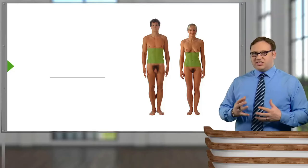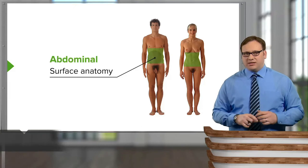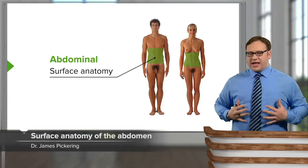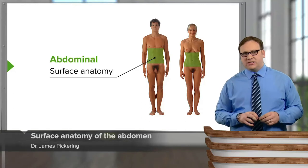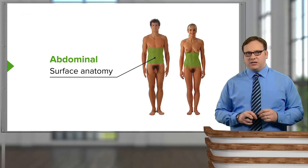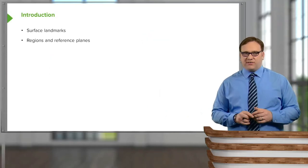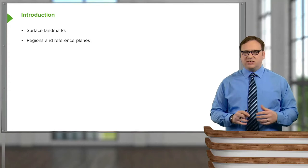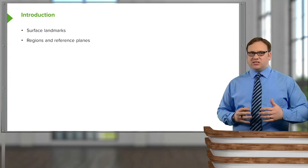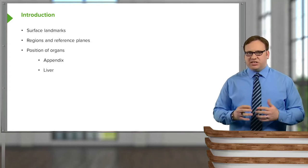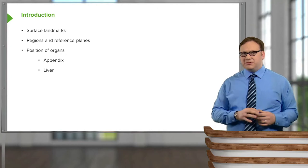In this lecture, we're going to look at the surface anatomy of the abdomen. We're going to look at various surface landmarks which we can observe on the anterior and lateral aspects of the abdomen. We're going to use these landmarks to create various reference planes and regions, and then using these regions, locate the position of organs within the abdomen.